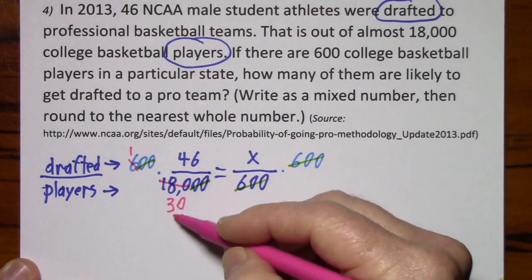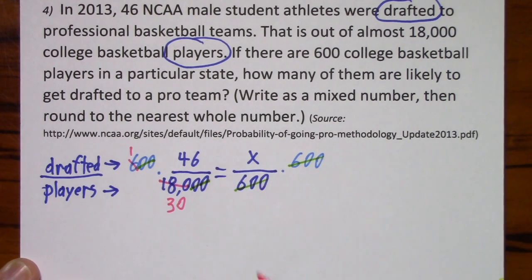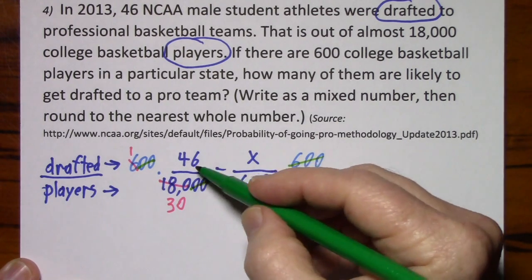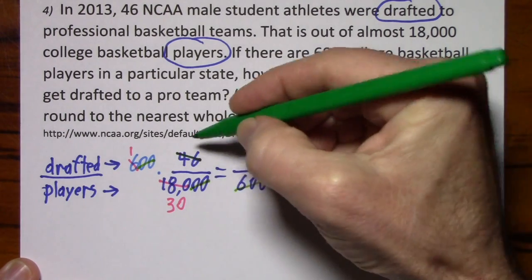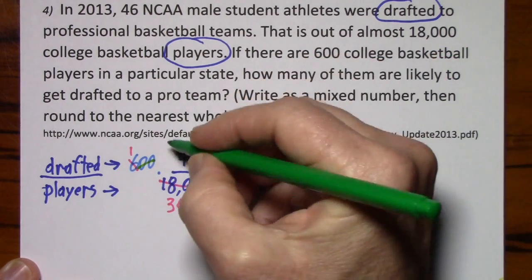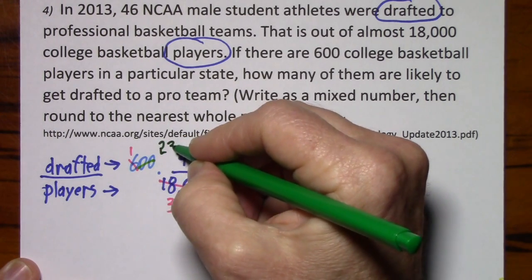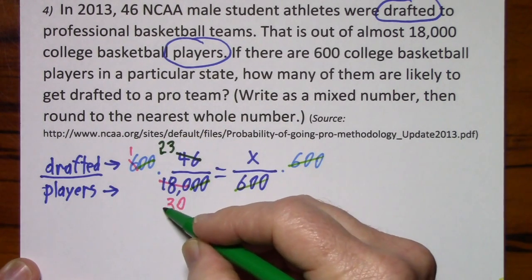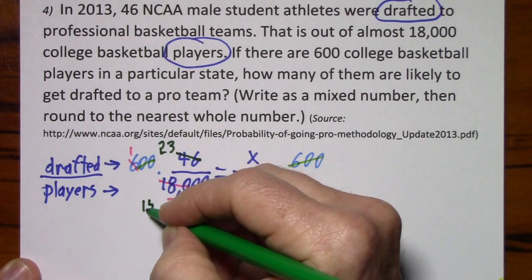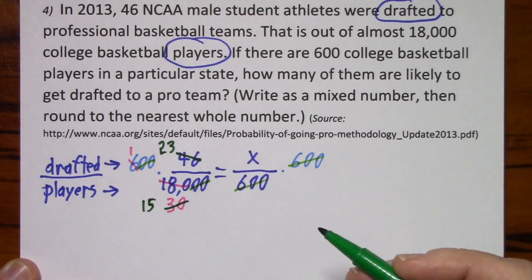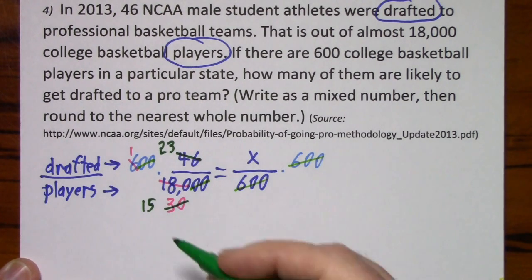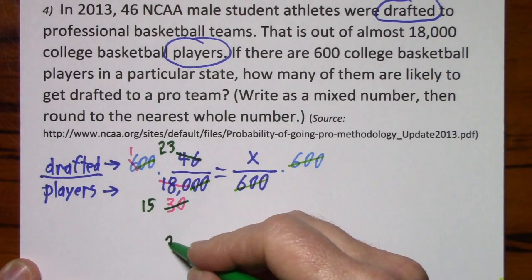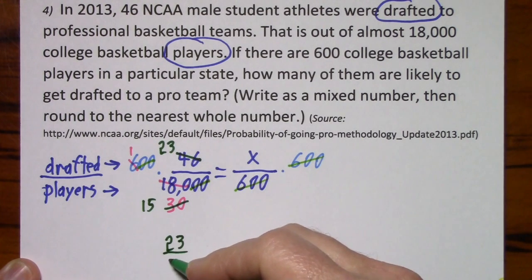Notice we can still reduce here, so we'll just keep reducing. Common factor of 2. Divide by 2, you get 23. Divide by 2, you get 15. So for the most part we reduced our way to an answer. We've got 23 fifteenths.